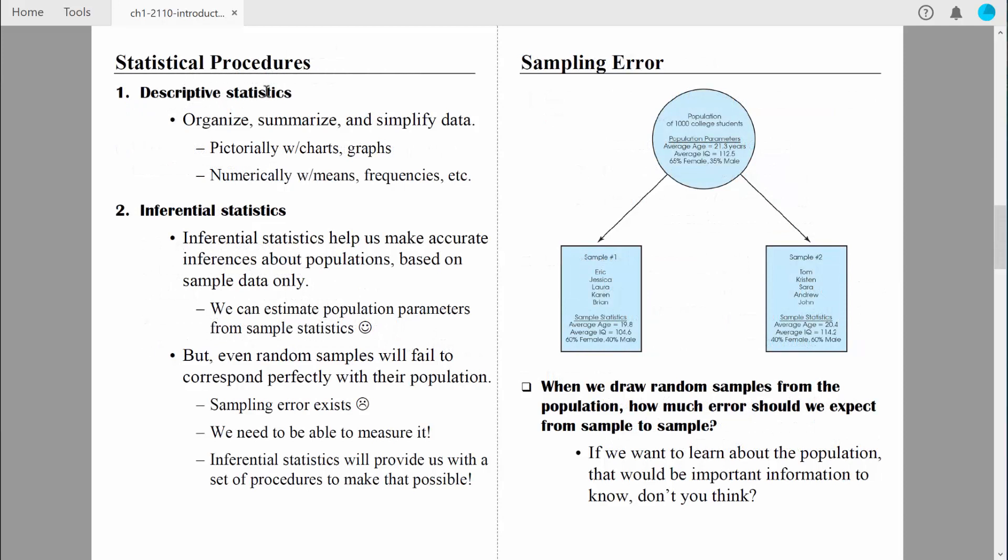Let's talk about descriptive statistics first. As the name implies, our primary goal is to describe our data, to simply start telling the story of our data. And the way we can do that is by organizing our data, summarizing our data, and just in general simplifying it so that we can communicate it in a very effective, easy way to other people. The most obvious way that we can do that is numerically, using numbers like means, which are just averages, or frequencies or percentages or something like that. Let me give you an example.